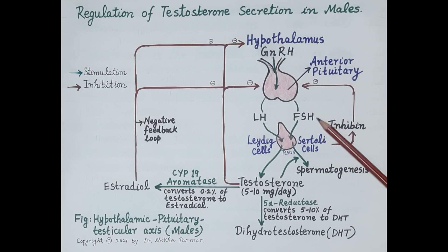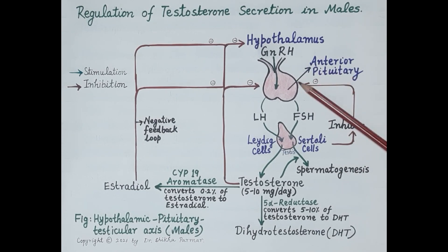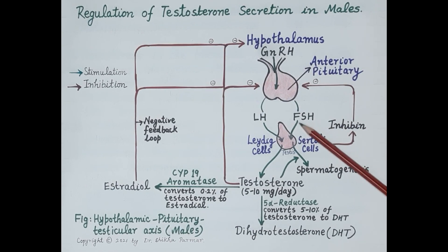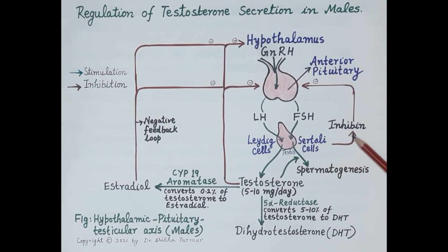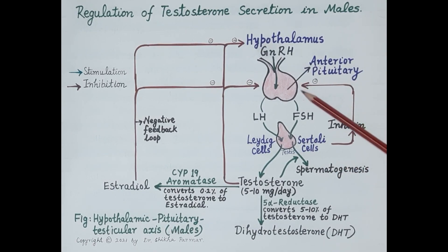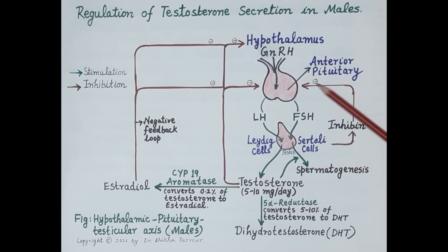Whenever the levels of FSH rise in the blood, inhibin — secreted by the Sertoli cells — inhibits the anterior pituitary, causing a fall in the level of FSH. So a rise in FSH causes release of inhibin by Sertoli cells, which inhibits the anterior pituitary and reduces FSH levels. This loop, depicted in red, is the inhibitory loop.